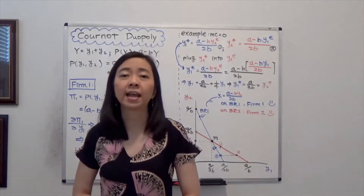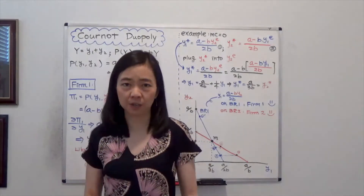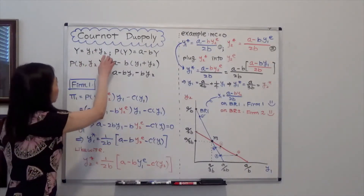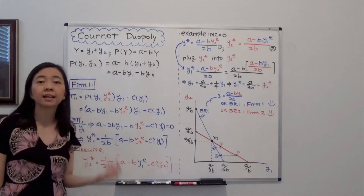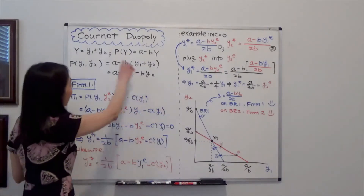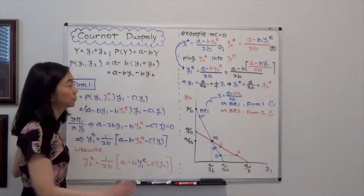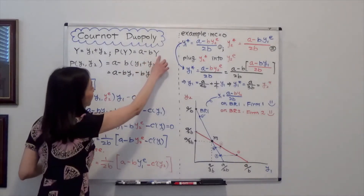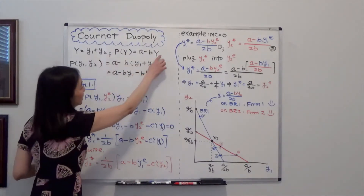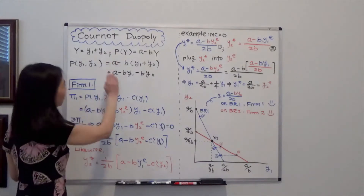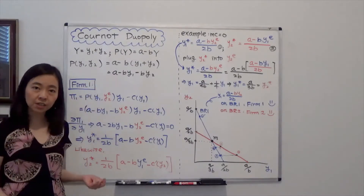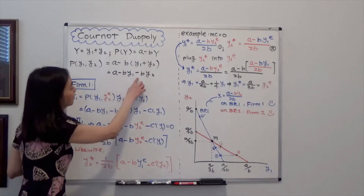In this model, we have two identical firms and they share the market. The market quantity Y is equal to Y1 plus Y2, where Y1 and Y2 stand for the quantity of firm 1 and firm 2 respectively. We have inverse demand function P(Y) is equal to A minus BY. Since Y is the market quantity, we can substitute Y1 plus Y2 into the inverse demand function, giving us price equal to A minus B times Y1 minus B times Y2.